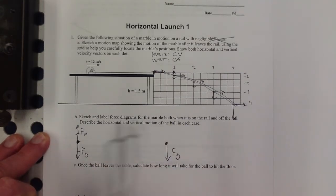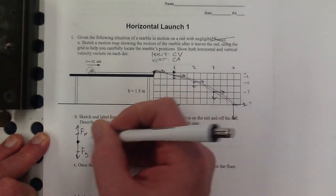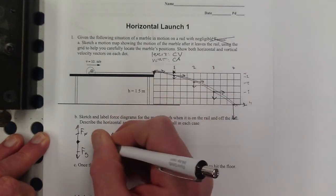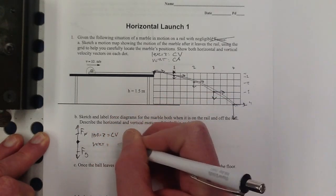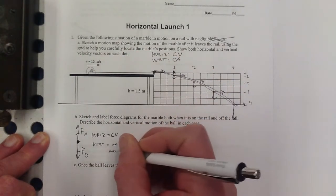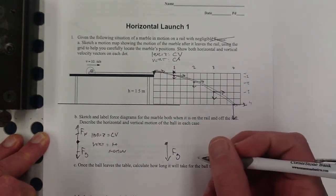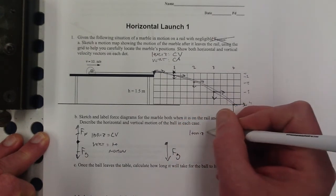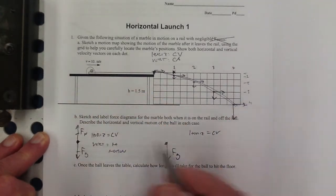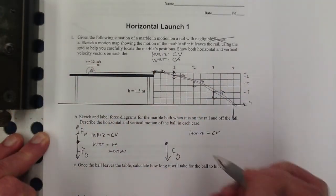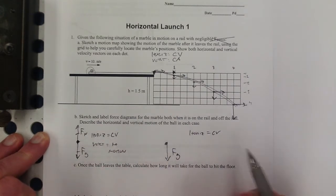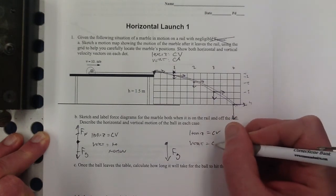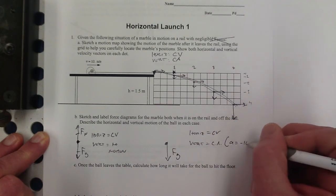Describe the horizontal and vertical motion of the ball in each case. So here, horizontal is constant velocity, and vertical, there's no motion when it's up on the table. No vertical motion. And then when it's off the table, in the horizontal direction, I still have constant velocity, the same constant velocity, because nothing's changed in the horizontal direction, right? There's no forces, and there's still no forces. In the vertical direction, I now have constant acceleration, where the acceleration is negative 10.